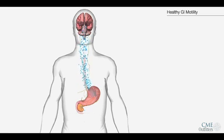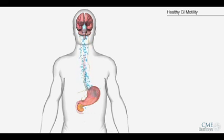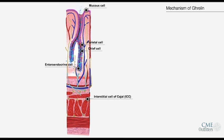The interaction of ghrelin with receptors then sends a signal back to the vagus nerve to the extrinsic nerve plexus, which ultimately stimulates movement of the stomach. Here you can see changes at the microscopic level within the stomach wall and how the ghrelinergic cells along the lining of the stomach are working.